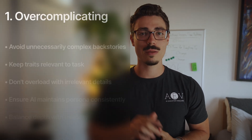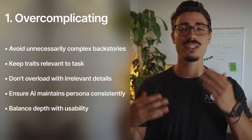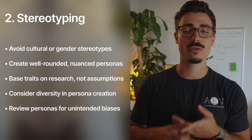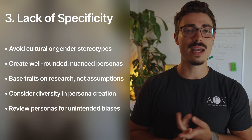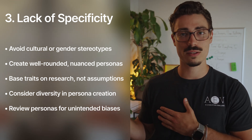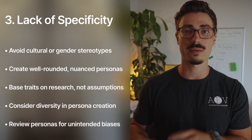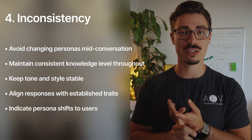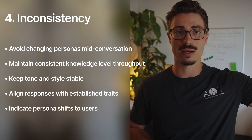Let's talk about some pitfalls I keep noticing when people make their own personas. Number one is over-complicating — avoid creating overly complex personas that may confuse the AI or lead to inconsistent responses. Number two is stereotyping — be cautious not to rely on harmful stereotypes. Number three is lack of specificity — vague personas may not effectively guide the AI's responses. There's a fine balance between too complicated and too vague. Number four is inconsistency — switching personas mid-conversation leads to confusing, contradictory output. Stick to one; if you need another, build a separate chat.